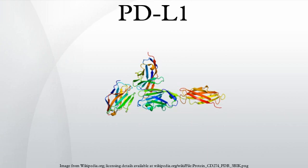Regulation by interferons: upon IFN-γ stimulation, PDL1 is expressed on T cells, NK cells, macrophages, myeloid DCs, B cells, epithelial cells, and vascular endothelial cells. The PDL1 gene promoter region has a response element to IRF1, the interferon regulatory factor. Type I interferons can also upregulate PDL1 on murine hepatocytes, monocytes, DCs, and tumor cells.